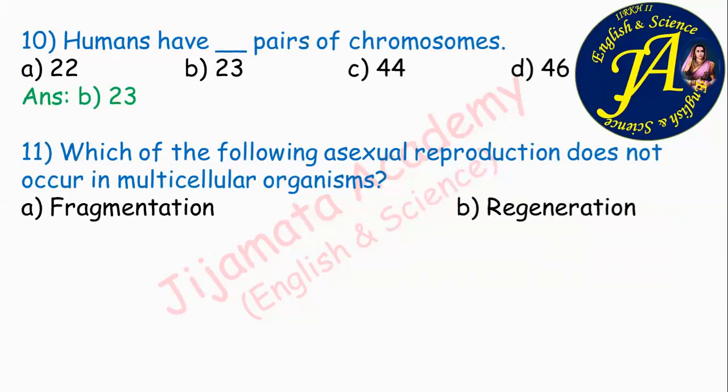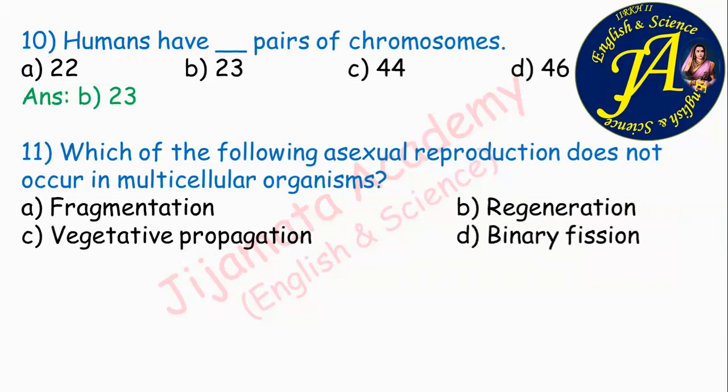The correct answer is option D: binary fission. Binary fission is a type of asexual reproduction in unicellular organisms like protists — amoeba, paramecium, euglena, etc. It is not asexual reproduction in multicellular organisms. Option D is correct.